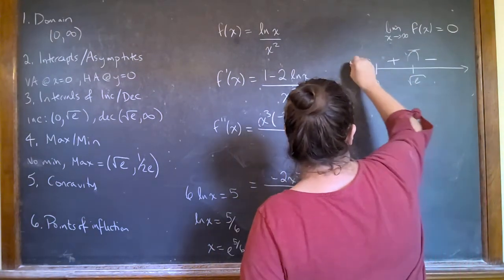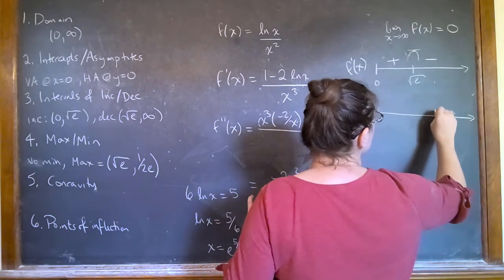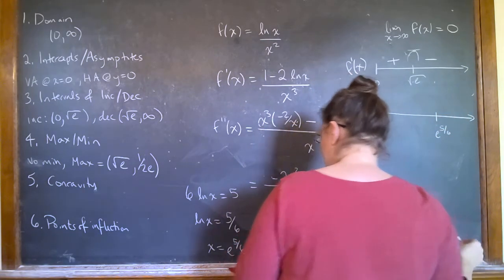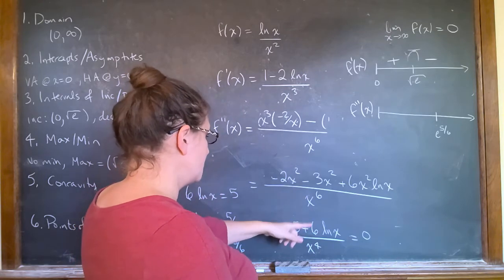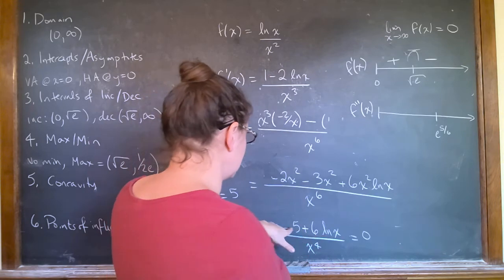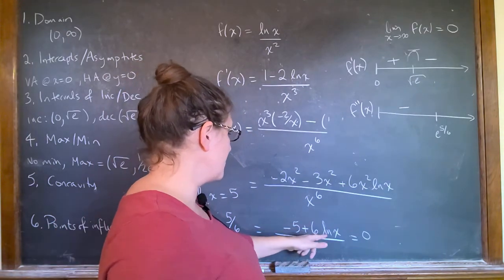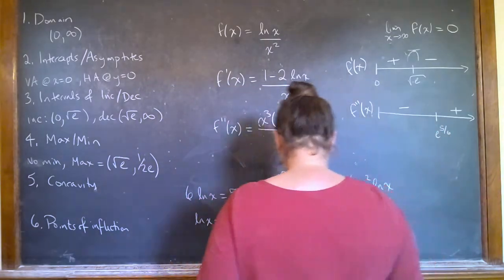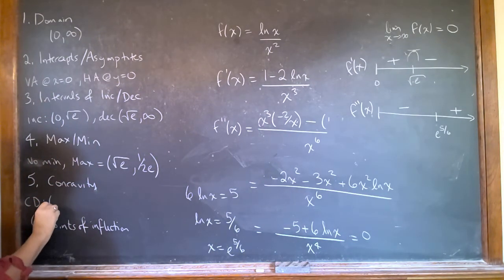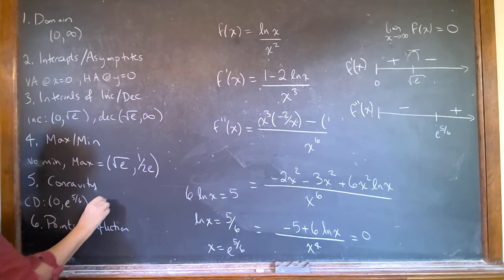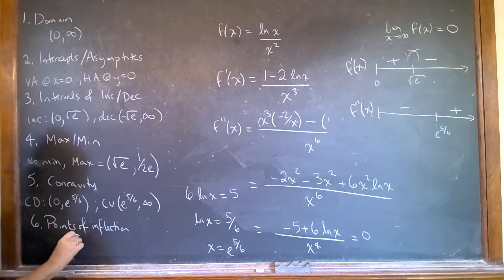I'll keep this down here. So this one was my sign chart for the first derivative. I do like to label them. So I know what's going on. So here is my e to the five sixths. And let's look at this sign chart here. If I look at something that is less than e to the five sixths, I'm going to get something that's negative on top here. And if I look at something that's bigger than e to the five sixths, I'm going to get something that is positive here. So we have one point of inflection. So we have concave down from zero to e to the five sixths. And concave up from e to the five sixths to infinity. And my inflection point is e to the five sixths.